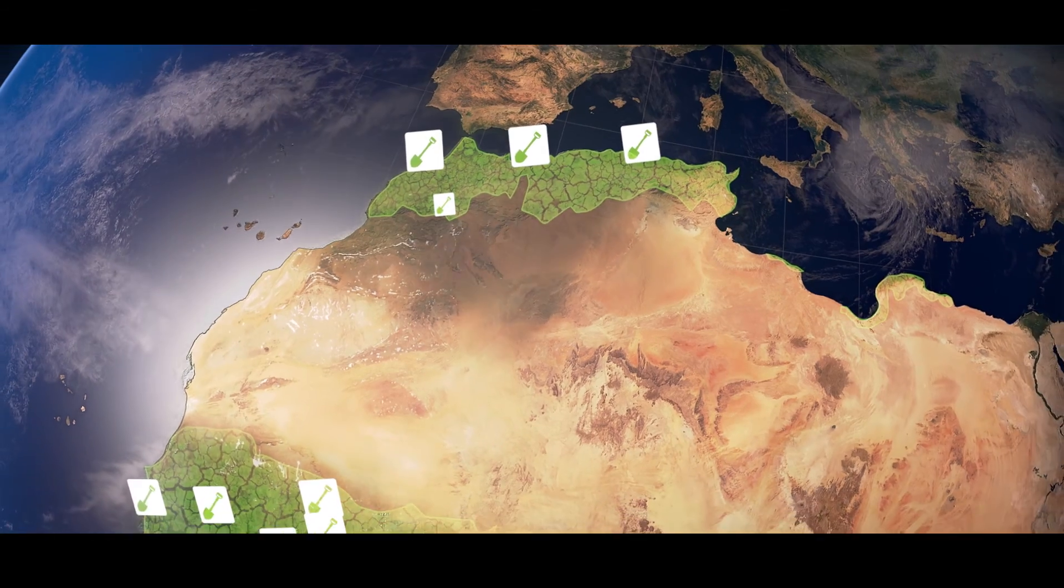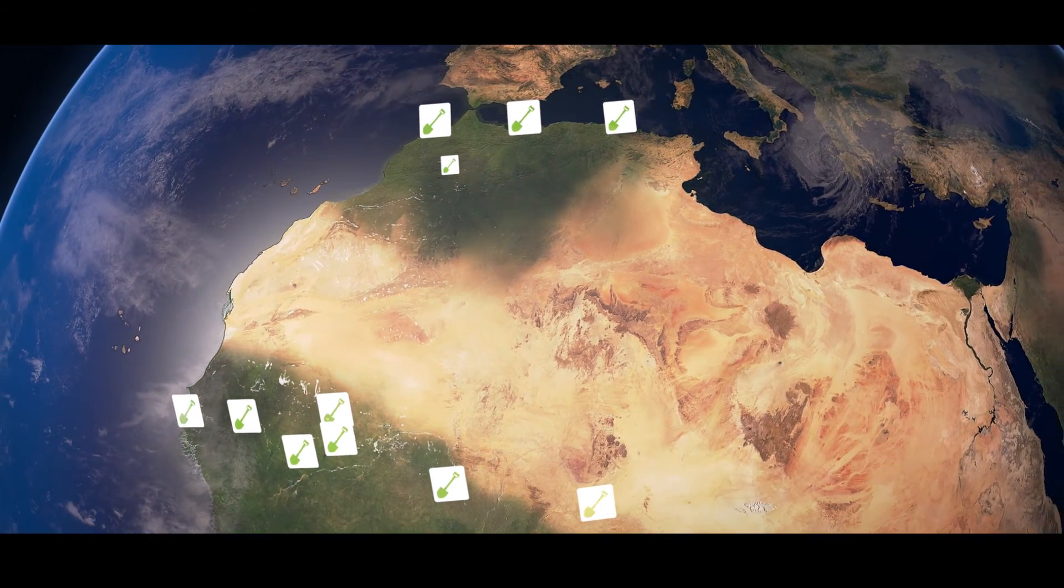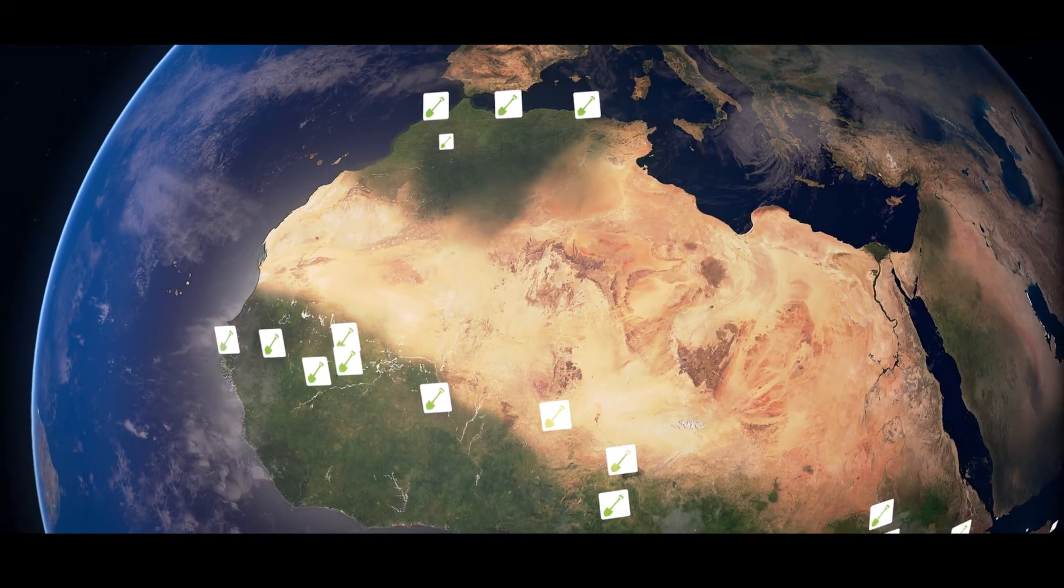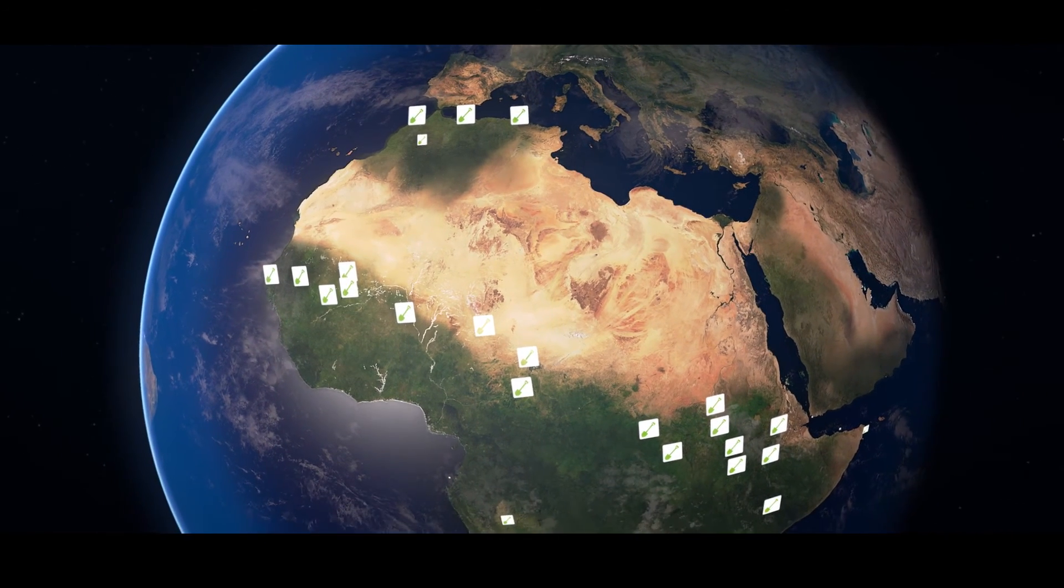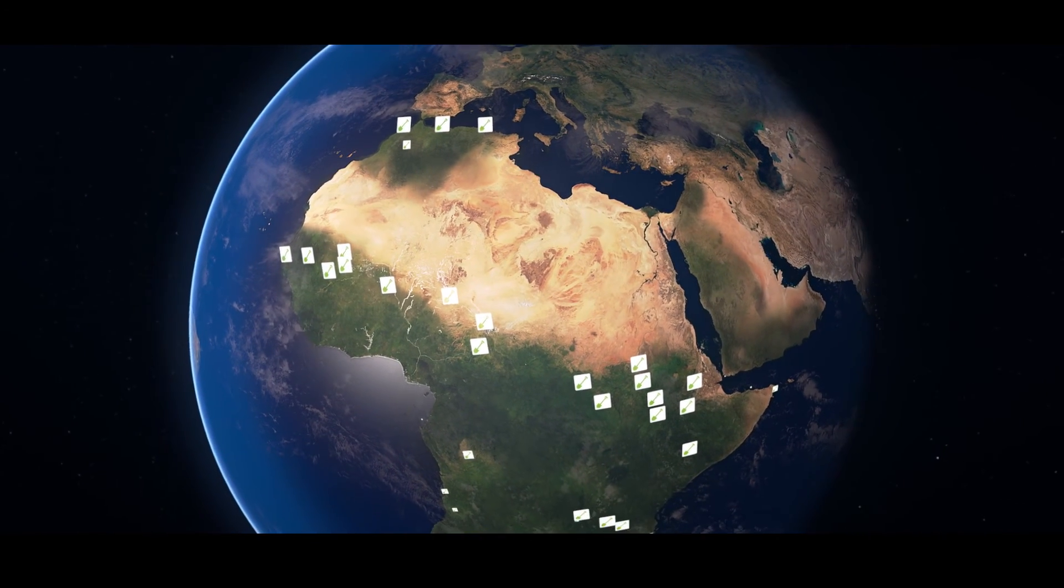New vegetation cools the area and takes carbon out of the air. Vegetation is the air conditioning of our planet, because more vegetation means more cooling.